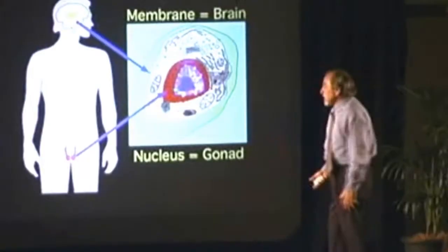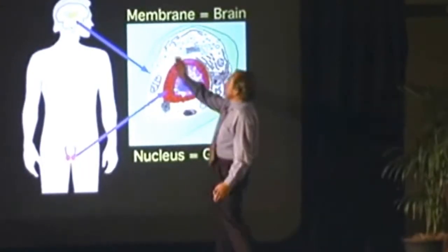The outer layer, called the ectoderm, only gives rise to two things in the human body: skin and the brain and nervous system. Your brain is derived from your skin. And it makes sense as to why, because I'll show you.